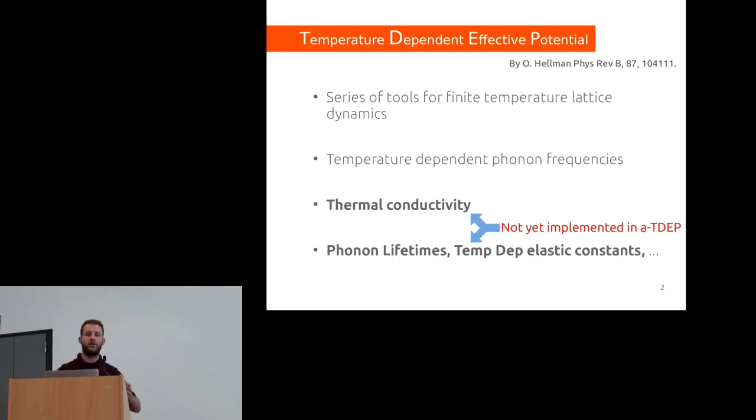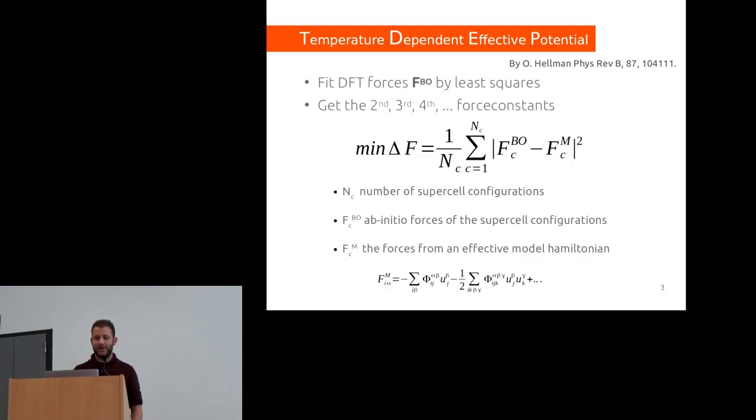The main difference is that the Hellman implementation is more advanced and already has capabilities for computing thermal conductivity, phonon lifetimes, and temperature-dependent elastic constants, which are not yet possible in ABINIT.